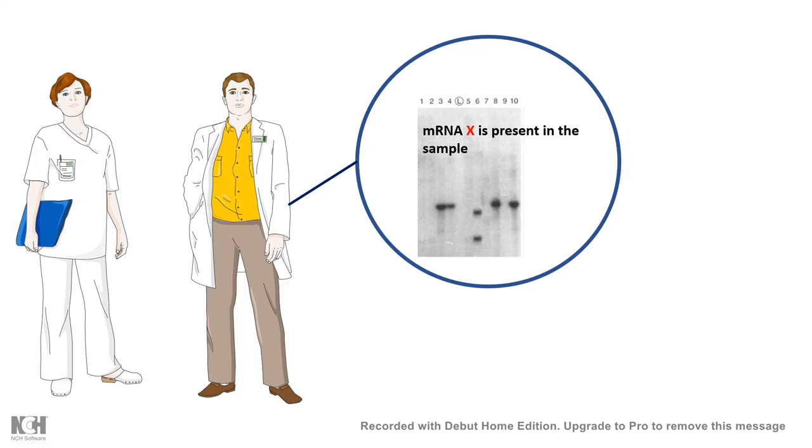Northern blot is very quantitative and useful if we do a densitometric analysis after we get the autoradiograph. The problem with this technique is it is hazardous because of radioactive probes and it is slow, takes a lot of time. These days, real-time quantitative PCR is a lot better technique and it's faster, more sensitive than Northern blot.